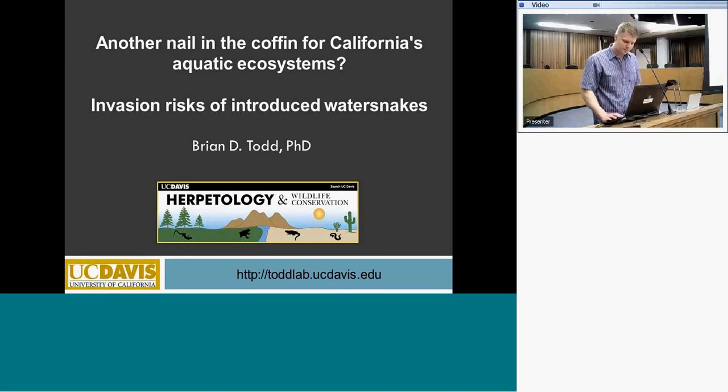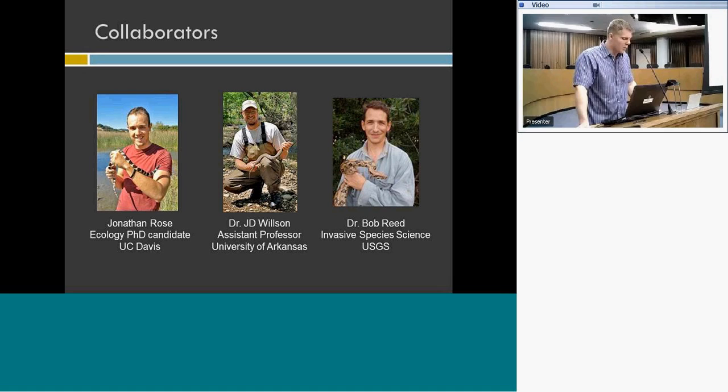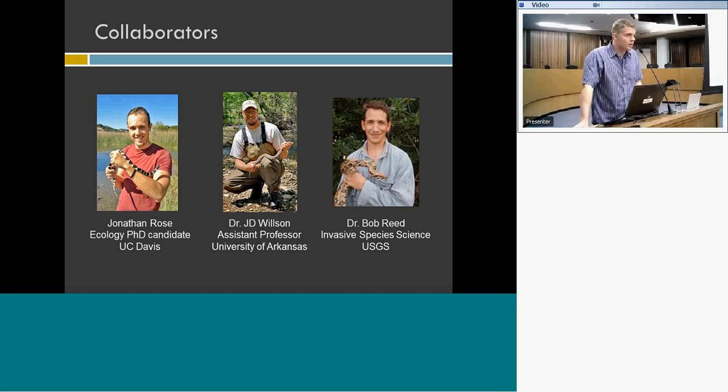The first person on the left is Jonathan Rose, one of my graduate students at UC Davis. He's been really instrumental in carrying out a lot of this work, and he and I have worked quite closely on these projects. I also have a professor in the southeast who has been involved in some of this research here in California, and Bob Reed with the U.S. Geological Survey, who first tipped me off to this issue when I moved to California and led the project down in Harbor City.